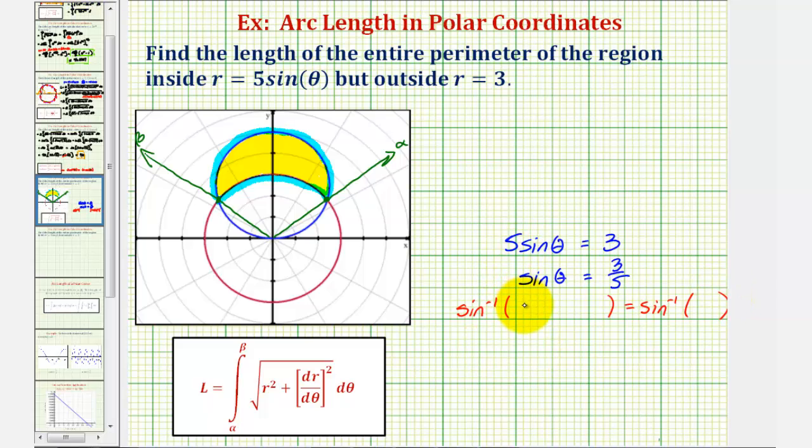We'd have inverse sine of sine theta equals inverse sine of three fifths, and therefore theta equals inverse sine of three fifths.